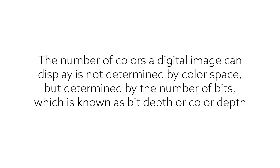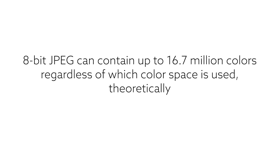However, don't get confused with the number of colors in a photo. The number of colors in a photo is not determined by the color space. The number of colors in a photo is determined by the number of bits in a photo. Here is an example: an 8-bit JPEG file can contain up to approximately 16.7 million different colors, no matter which color space you use, either sRGB or Adobe RGB. It really doesn't matter.